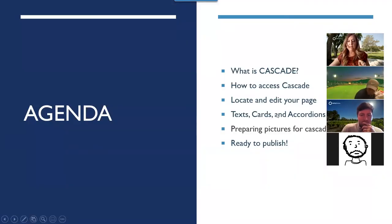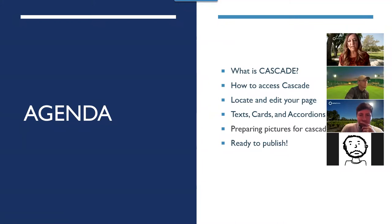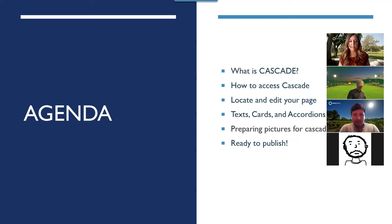So this is what we're going to cover. I'm going to go fairly slowly in the beginning, because that seems to be the most difficult part — at least it was for me. The way I developed this content was by learning Cascade myself and asking Jason and Alvin 1,000 questions. First: what is Cascade? Why are we using it? We're going to discuss how to access Cascade, how to locate and edit your page. This session is being recorded, so I'll be able to send it out after editing. We're going to discuss texts, cards, and accordions — these are content selections.